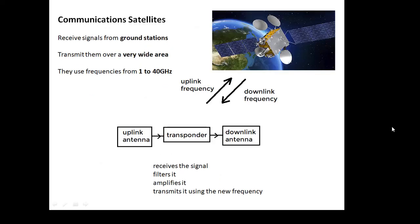Let's start with communication satellites. They receive signals from ground stations on the surface of the Earth and transmit this information over a very wide area — that's the advantage of satellites. They use frequencies from 1 to 40 gigahertz, very much microwaves. Interestingly, the uplink frequency going up to the satellite is different to the downlink frequency, and they use two separate antennas, so they don't interfere with each other. Inside the satellite there's a transponder that receives the signal, filters out any interference, amplifies it, and then transmits it using the new frequency.